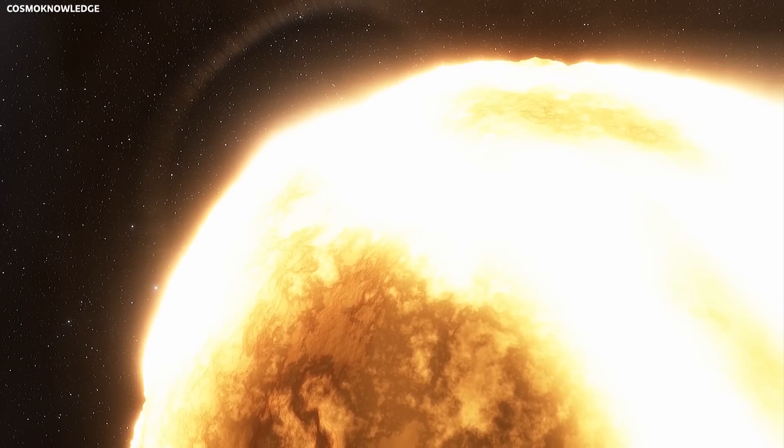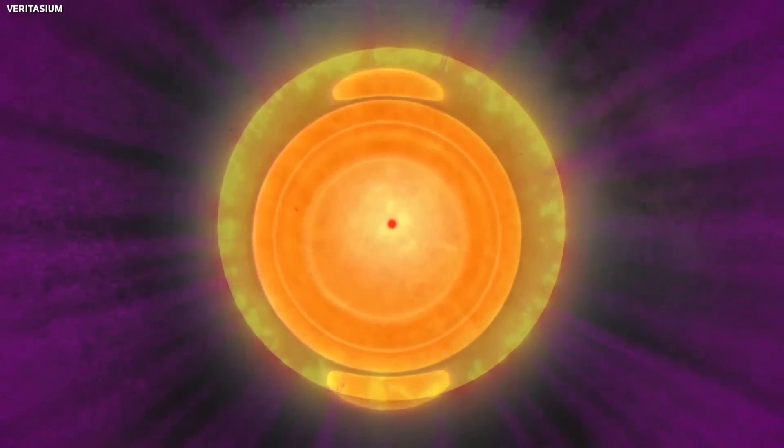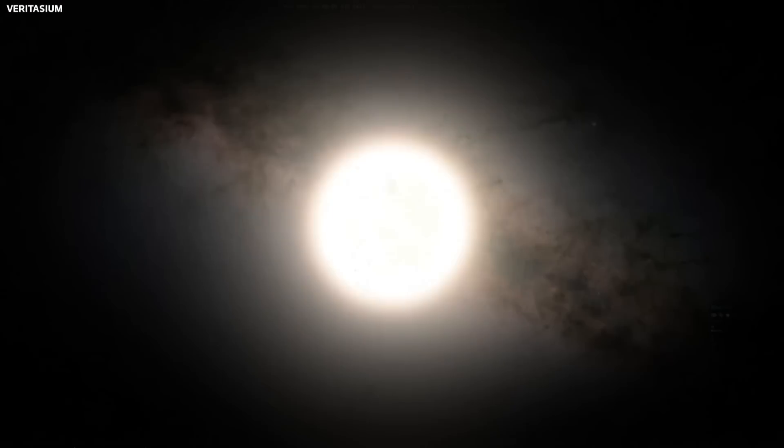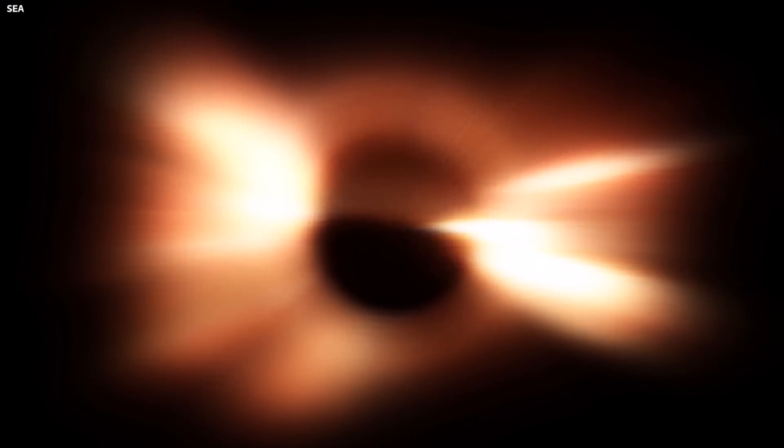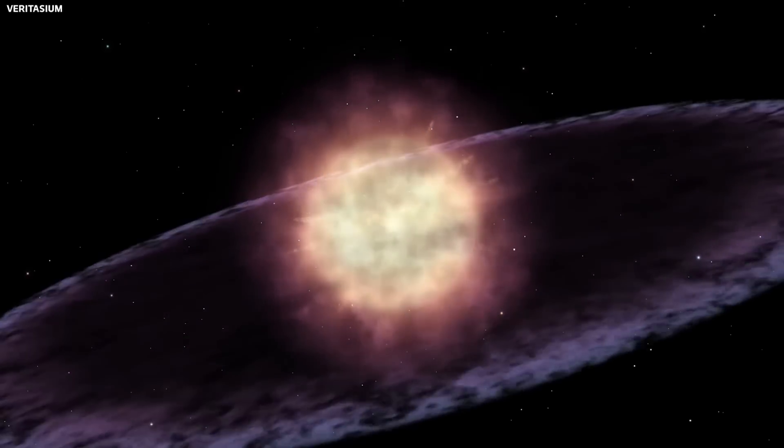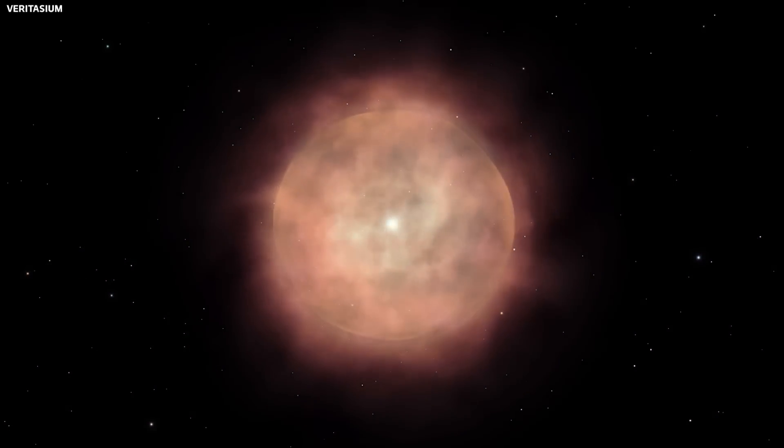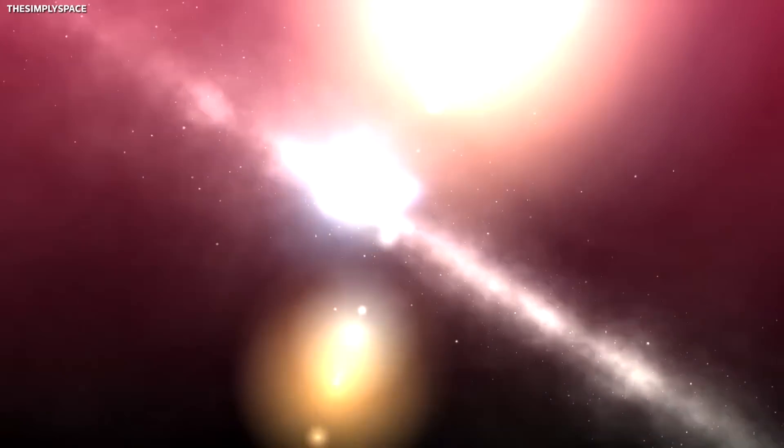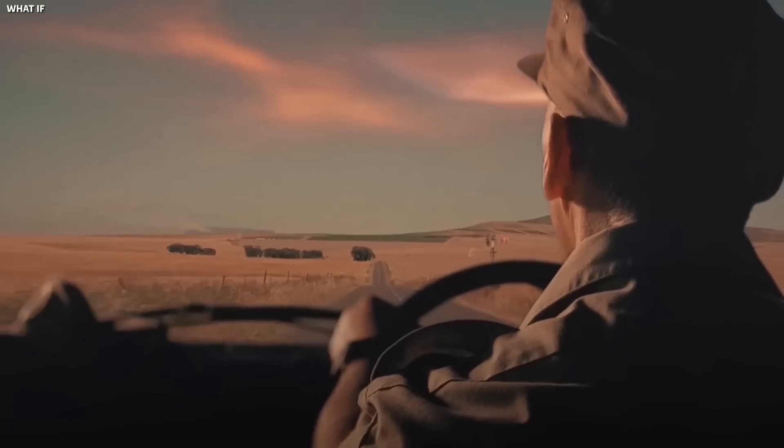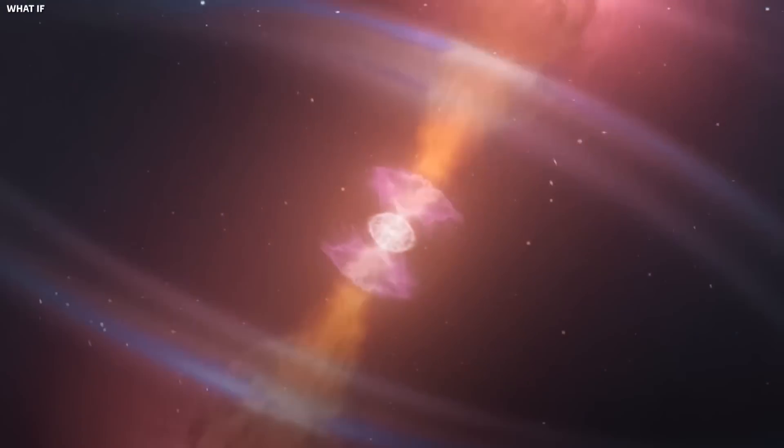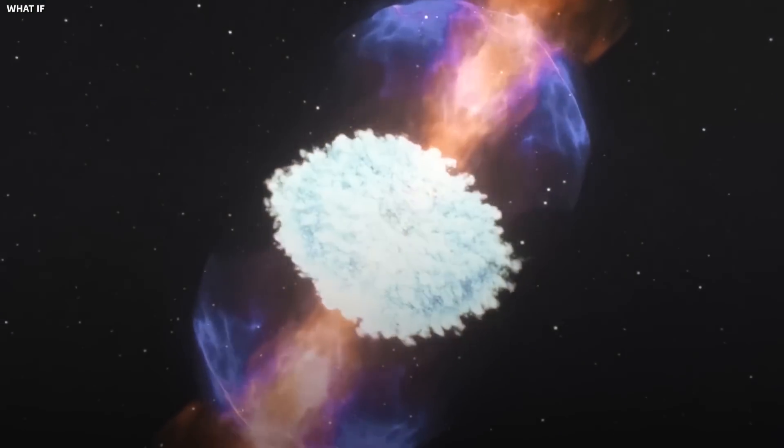While it might seem like a paradox, massive stars like Betelgeuse have shorter lifespans than smaller ones. This is because they burn through their nuclear fuel at a much faster rate. Betelgeuse is nearing the end of its life, and when it dies, it will do so in a blaze of glory, exploding as a supernova. This explosion will be so bright that it will be visible in the daytime and will outshine every other star in the night sky.